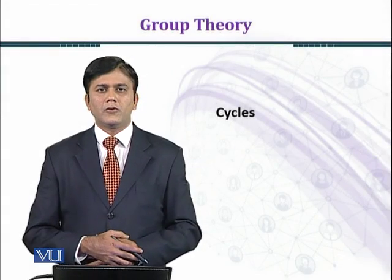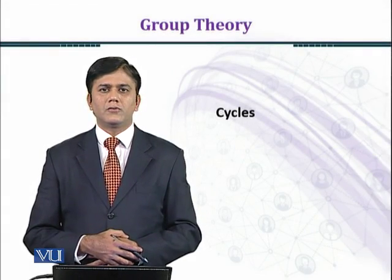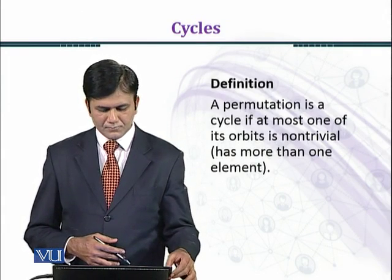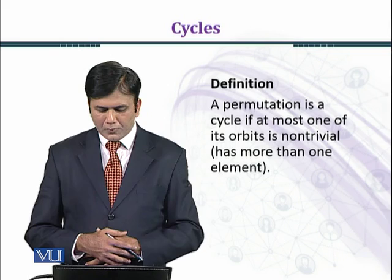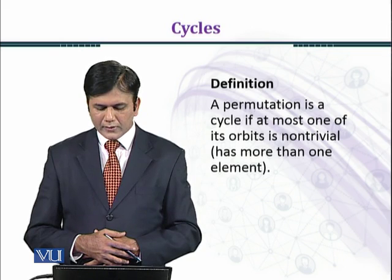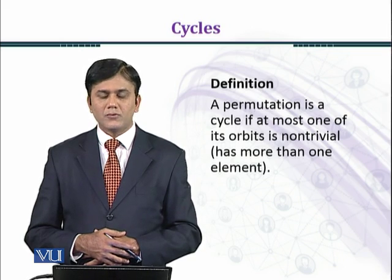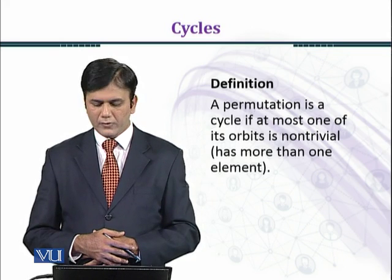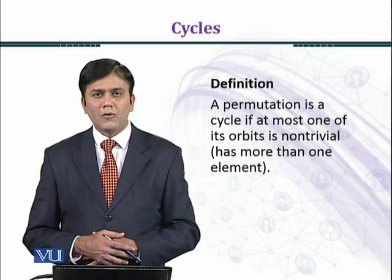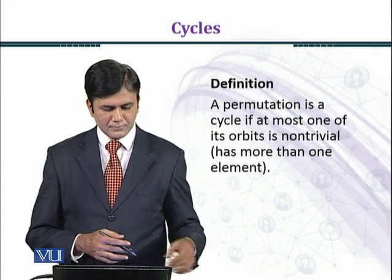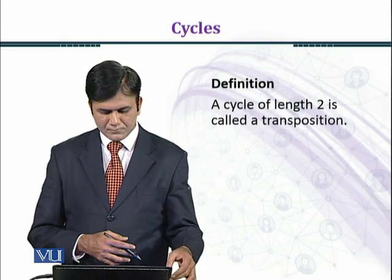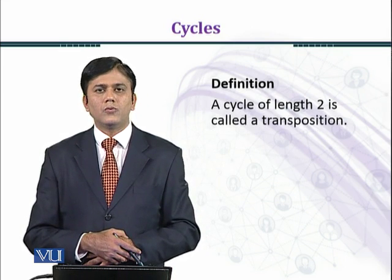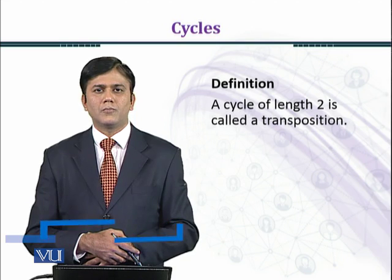In this module, we shall introduce cycles and transpositions. A permutation is a cycle if at most one of its orbits is non-trivial, meaning it has more than one element. A cycle of length 2 is called a transposition.